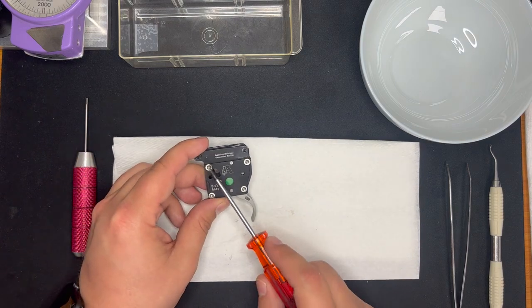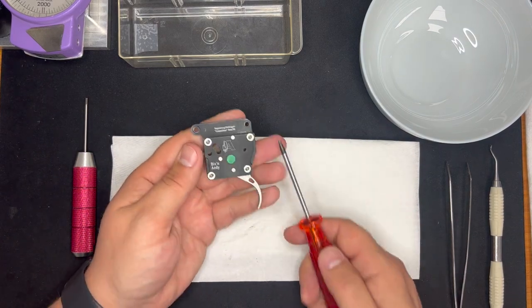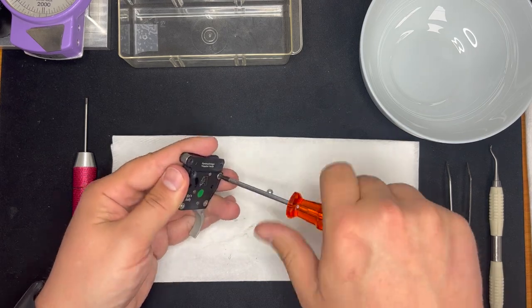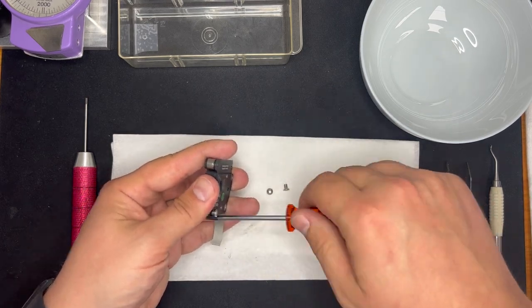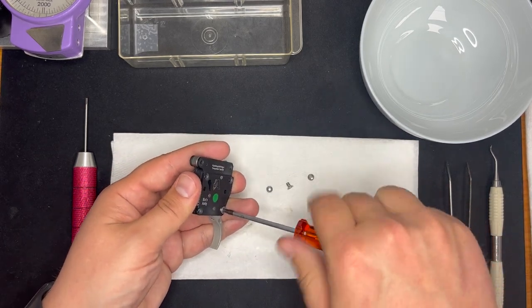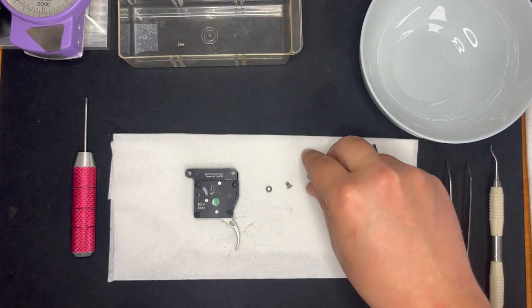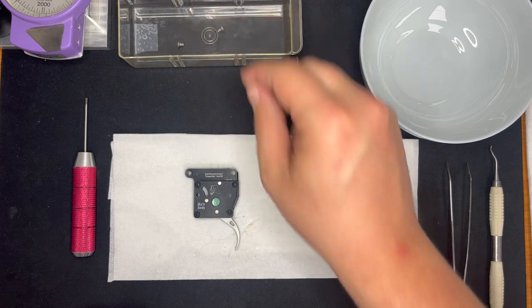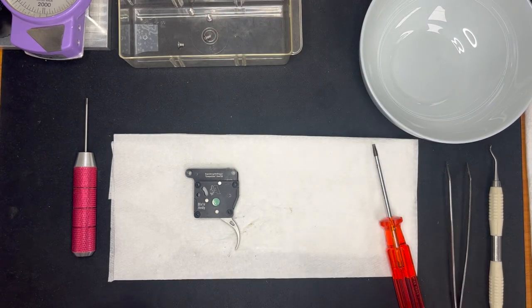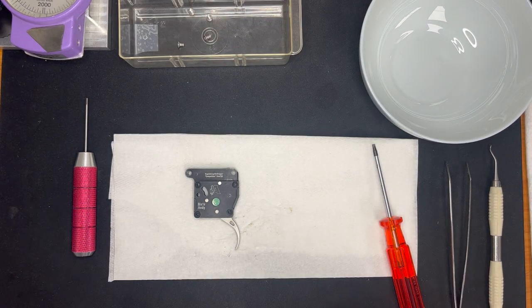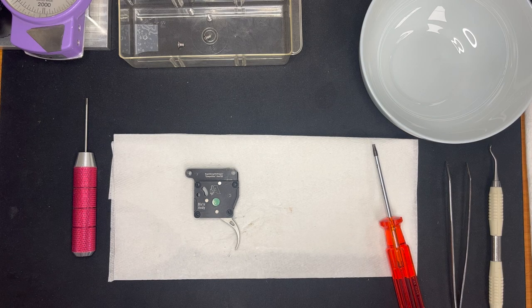We're going to start by removing these four cover screws. Pretty easy. Now that we have these four screws removed, I suggest putting them in some kind of container that you're going to have at your house. This way you're going to prevent you from losing any of those parts while you're disassembling the entirety of the trigger.